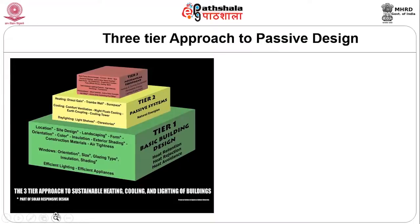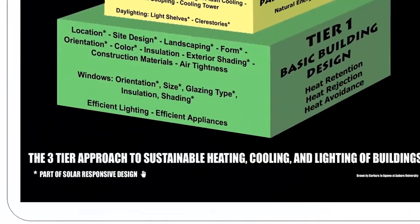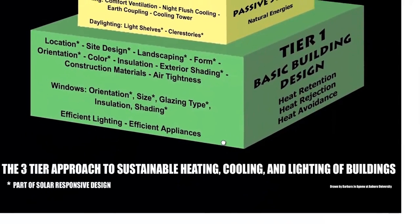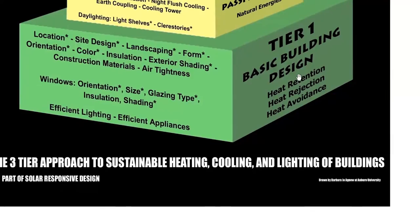This is the three-tier approach to passive design. At tier one — basic building design — you address heat retention, heat rejection, and heat avoidance. The elements discussed include location, site design, landscaping, form, orientation, color, insulation, exterior shading, construction materials, and air tightness. For windows, you consider the size, direction, type of glazing, insulation, shading devices, efficient lighting, and efficient appliances.